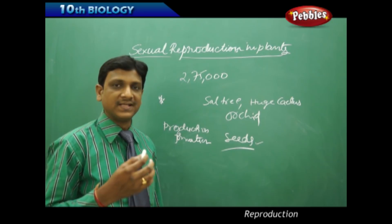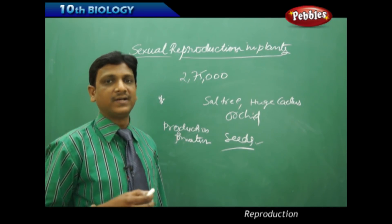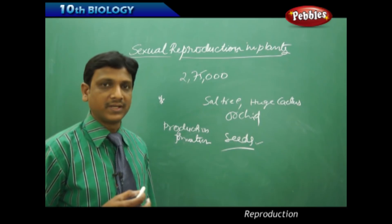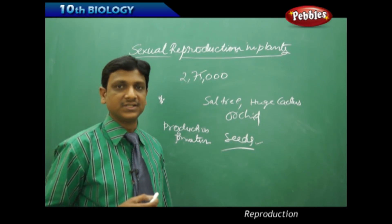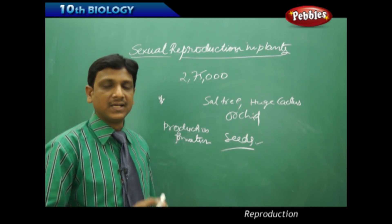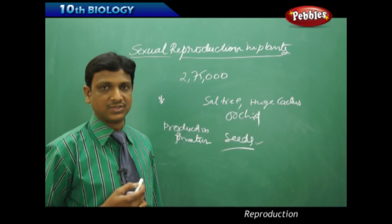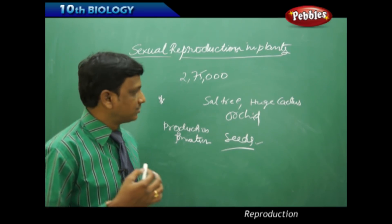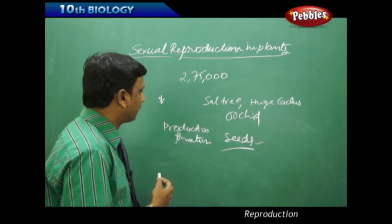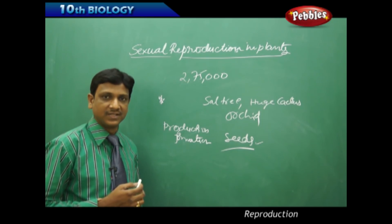When seeds are sown in soil and provided the necessary conditions like water, air, and other conditions, then germination takes place and a sapling or plant comes out. This is the process of sexual reproduction and growth of new plants in flowering plants.